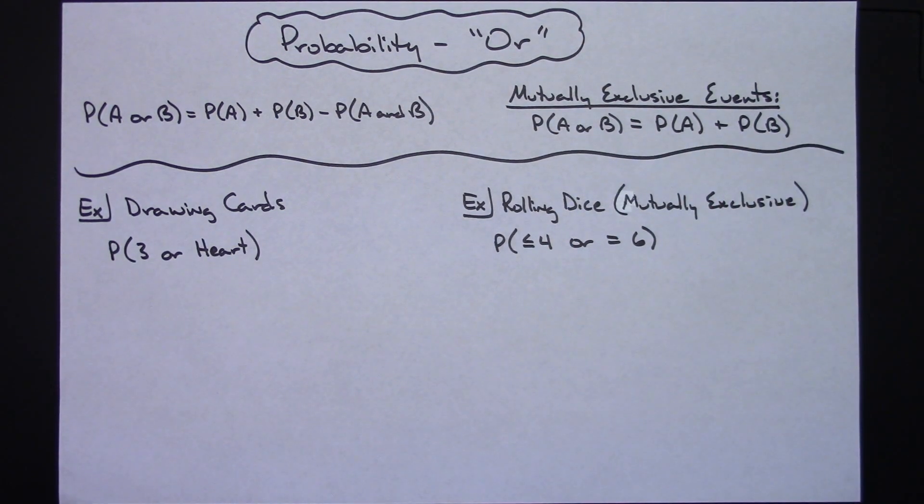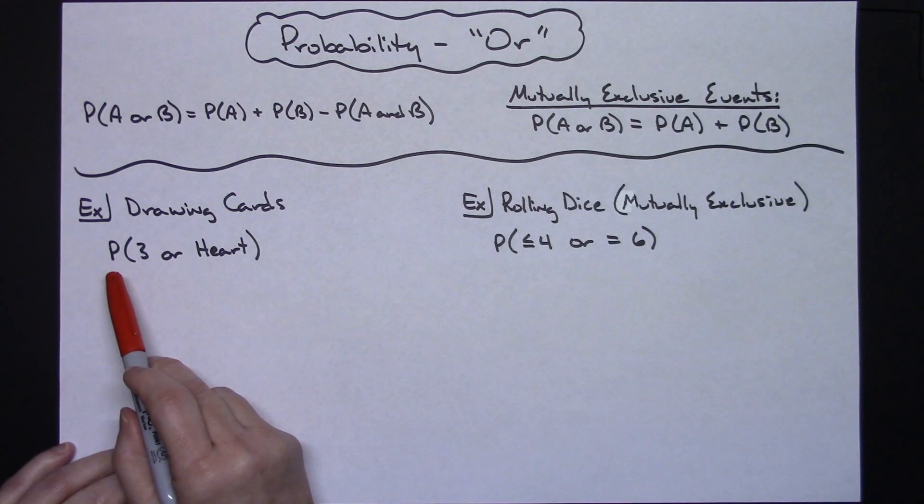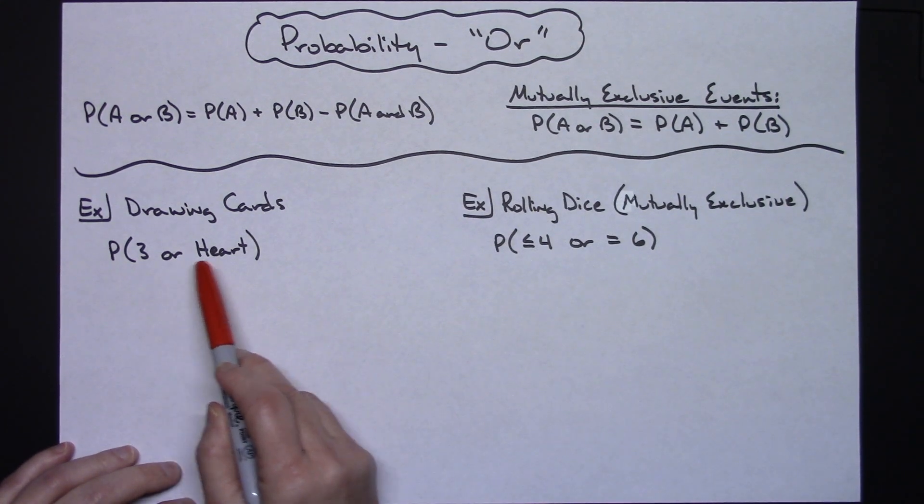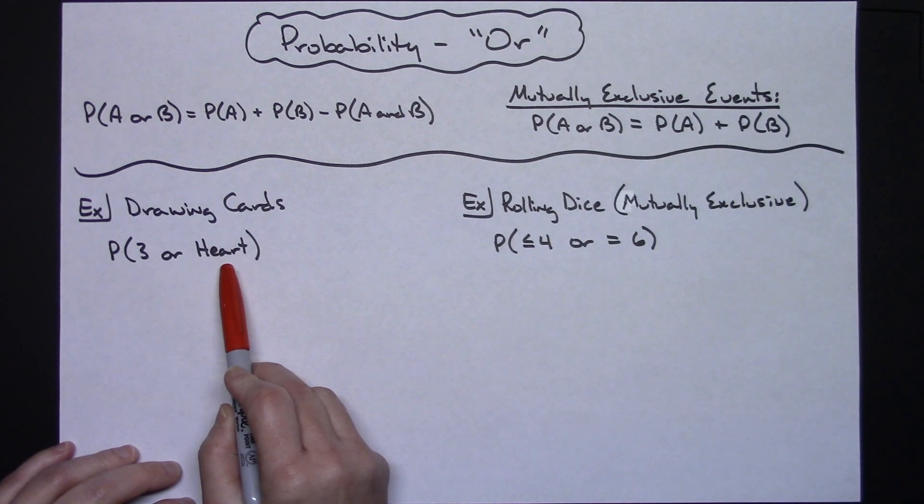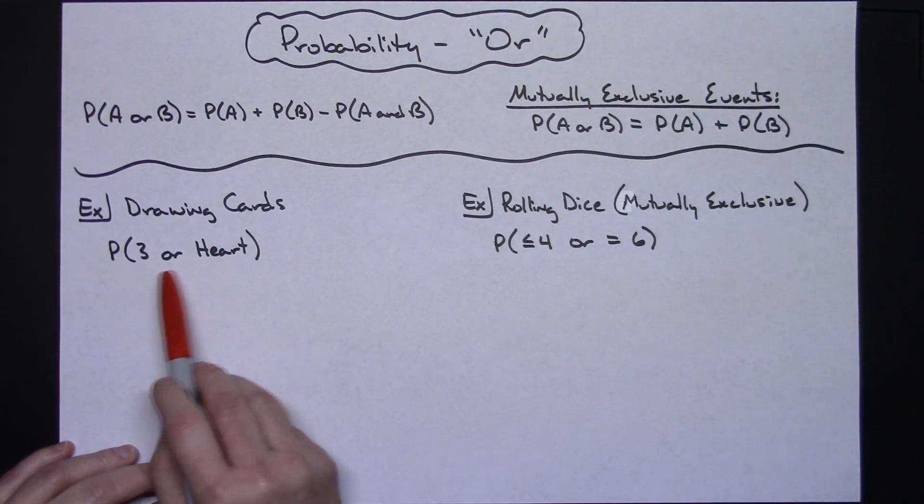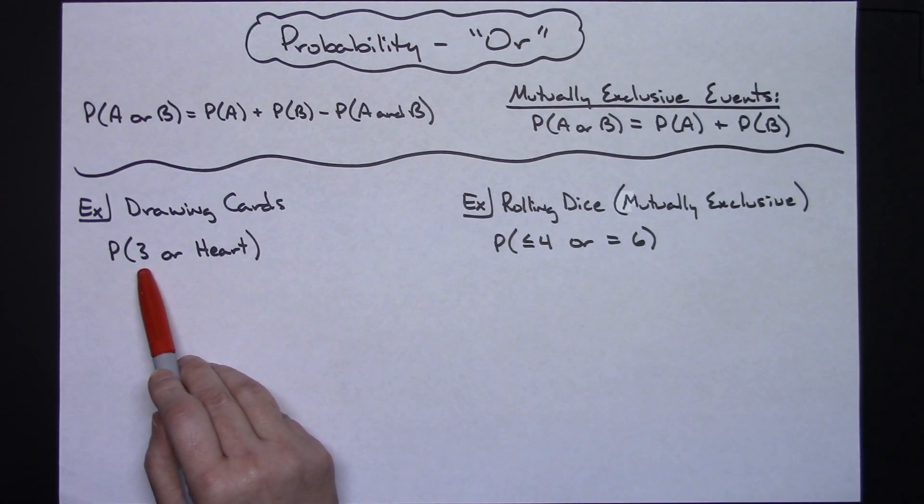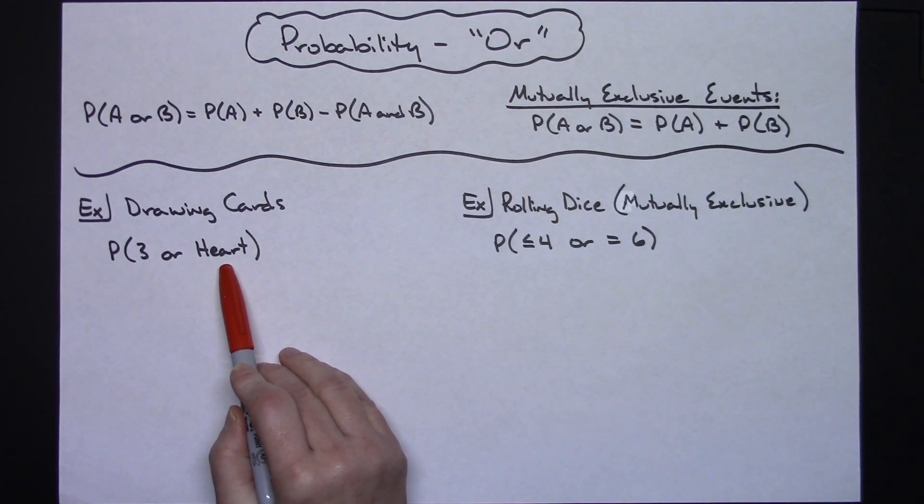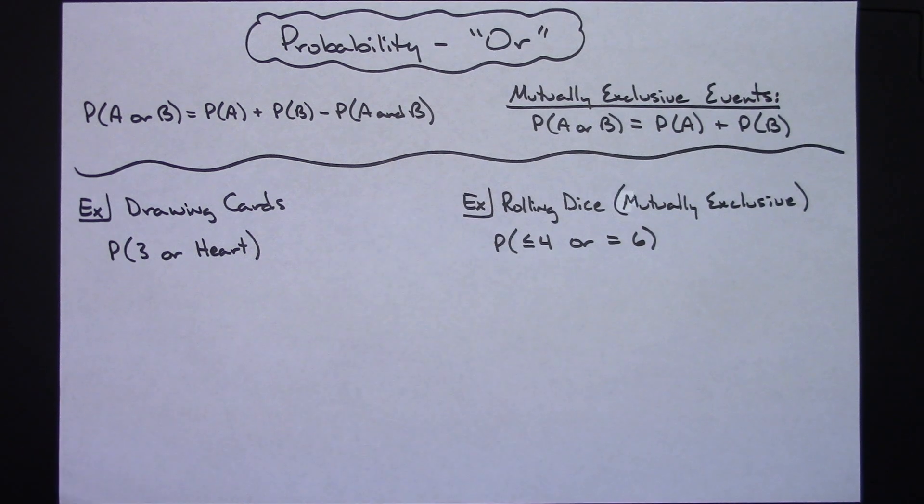So with that background information let's take a look at just drawing some cards here out of a traditional deck of cards. Let's say we want to do the probability of a three or a heart. These are not mutually exclusive because I could draw a three, I could draw a heart, but I could also draw a three of hearts. So that tells me I've got to use this first formula here.